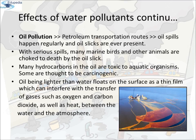Oil Pollution: Oil is one of the major energy sources today and huge volumes of oil are transported between points of production and consumption around the globe. All along these major transportation routes, oil spills happen regularly and oil films are ever-present. With serious spills, many marine birds and other animals are choked to death by these oil films. Even when dispersed, many hydrocarbons in the oil are very toxic to aquatic organisms. Some are thought to be carcinogenic in nature. Oil, being lighter than water, floats on the surface as a thin film which can interfere with the transfer of gases such as oxygen and carbon dioxide, as well as heat, between the water and the atmosphere. This is a picture of an oil spill.